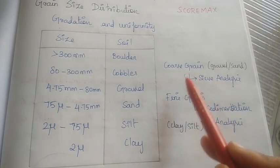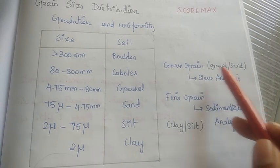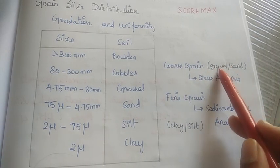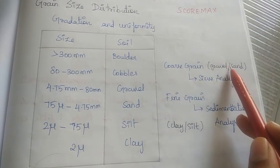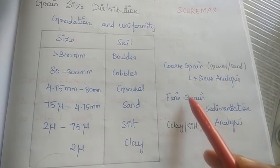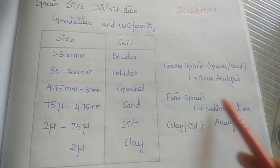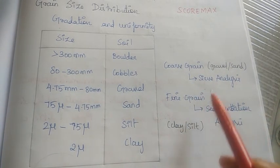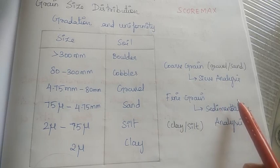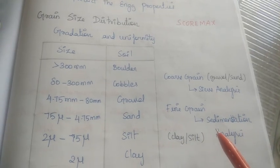The path is coarse grain. Coarse grain includes gravel, sand and coarse grain soil. Fine grain soil — we have sedimentation process. Clay and silt are fine grain soils.